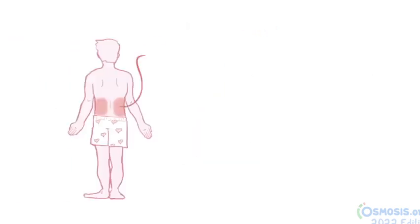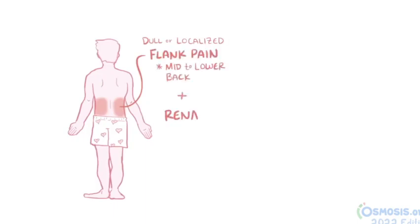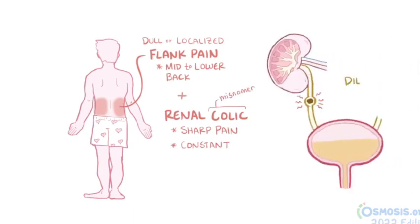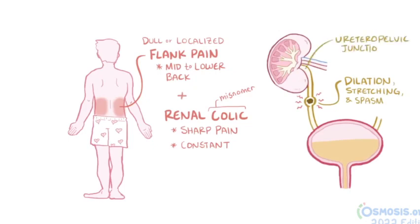Kidney stones can cause dull or localized flank pain in the mid to lower back on both sides, as well as renal colic, which is a sharp pain and is a bit of a misnomer because the pain is usually constant rather than intermittent. The pain is caused by the dilation, stretching, and spasm caused by obstruction of the ureter, and is typically worse at the uretero-pelvic junction and down the ureter, and subsides when the stone gets to the bladder.